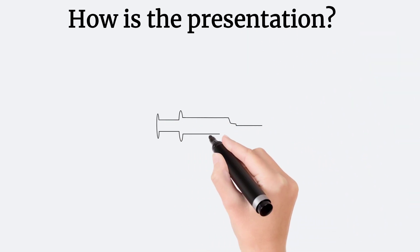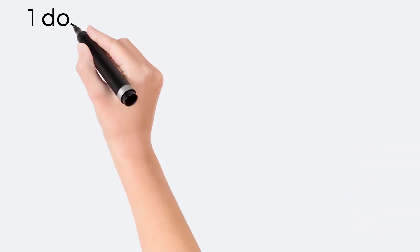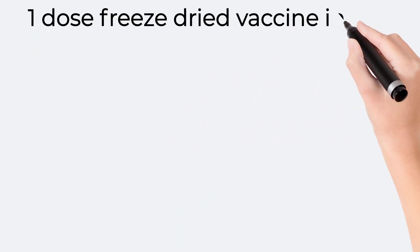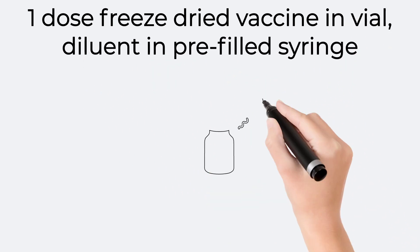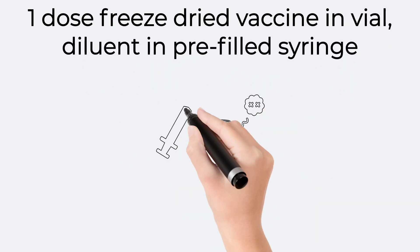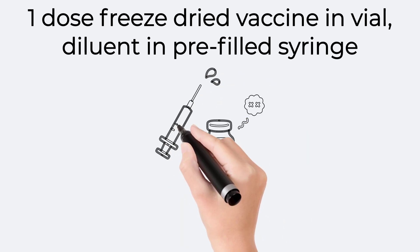How is the presentation of the vaccine? A single dose freeze-dried vaccine is available in a vial. Diluent, that is sterile water for injection, is available in a pre-filled syringe.